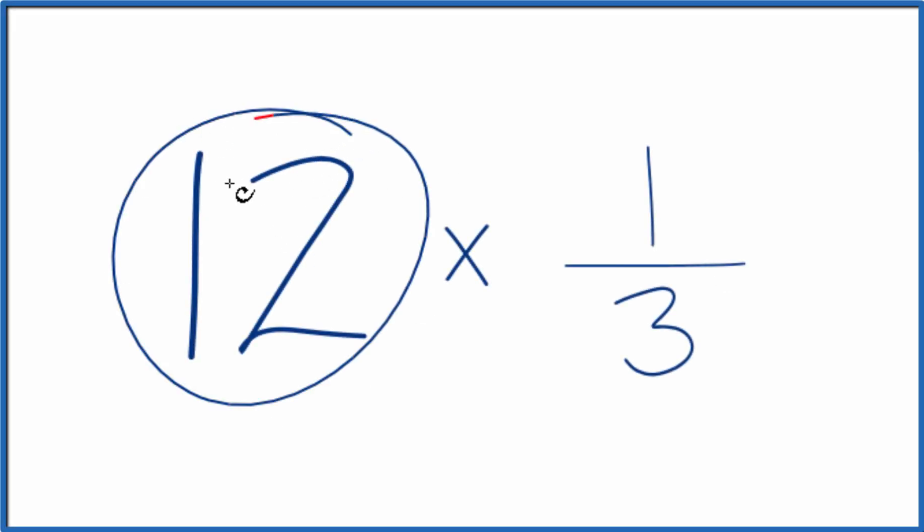So here's how you multiply 12 times one-third. So to start off with, you could add one-third together 12 times. That would give you the correct answer for 12 times one-third.